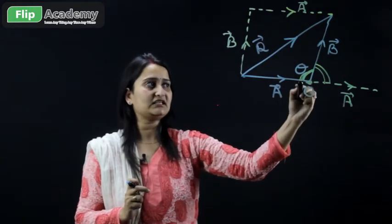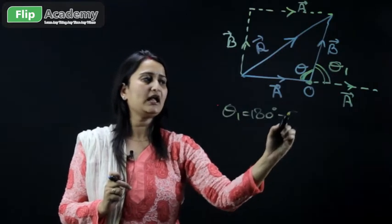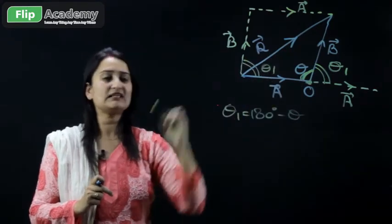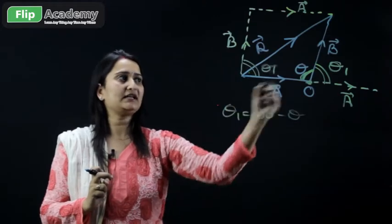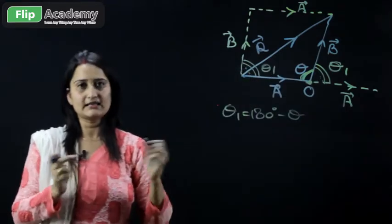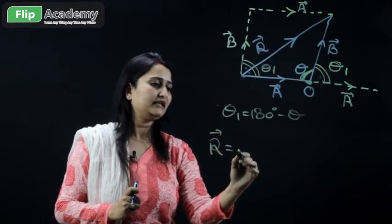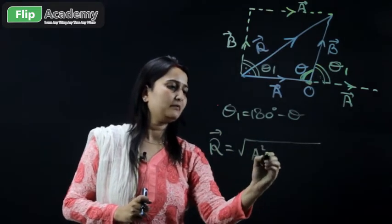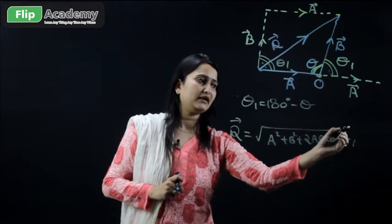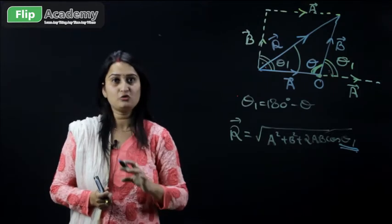The angle between the two vectors is 180° minus theta, which we call theta1. So theta1 = 180° - theta. Because it is a parallelogram with parallel lines, the corresponding angle also becomes theta1. The formula then becomes: R = √(A² + B² + 2AB cos θ1), where theta1 replaces theta.